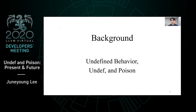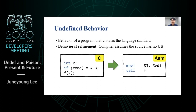Part 1. Let me explain what undefined behavior, undef value, and poison value are. Many compiler developers have already heard about undefined behavior. Undefined behavior is the behavior of a program that violates the language standard. It is allowed for a compiler to simply ignore the case when source has undefined behavior, and this is called behavioral refinement.